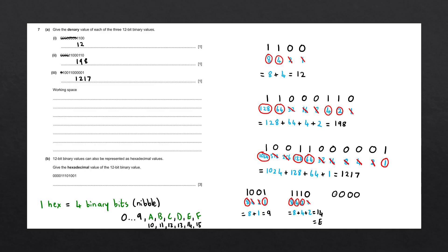For the final nibble, we have 0, 0, 0, 0. We don't even need to calculate — we know this is just 0. To get our answer, we put the hexadecimal numbers in order. The first group was 0000, so we write 0. We then had 1110, which gives us E. And the last group was 1001, giving us 9. So our final hexadecimal answer is 0E9.